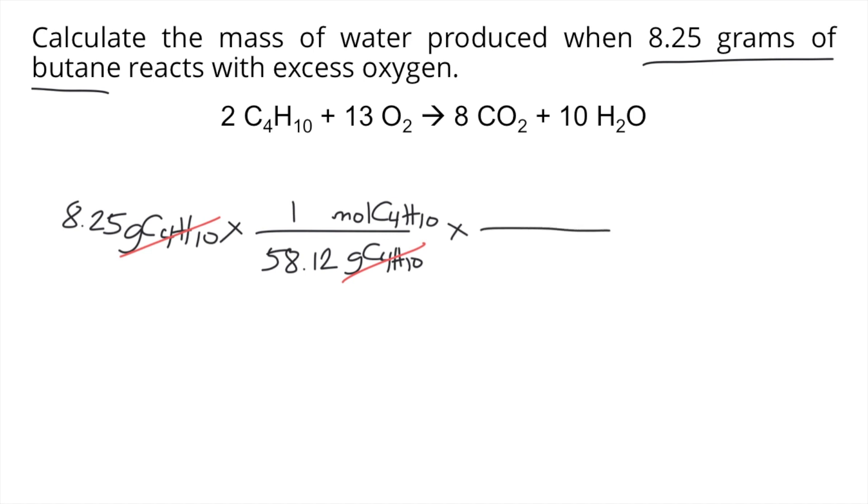And then you multiply that. So next step, we're going to convert moles of C4H10 into moles of water because the problem is asking for water. So from moles of C4H10 to moles of H2O. And as you can see in the balanced chemical reaction, we can see there the molar ratio.